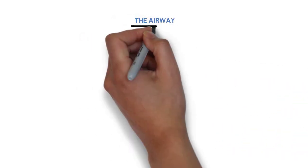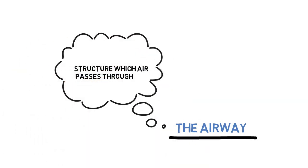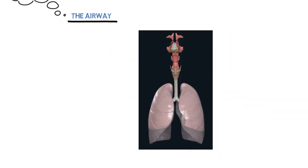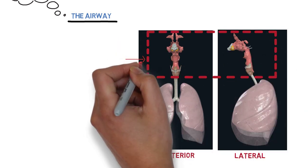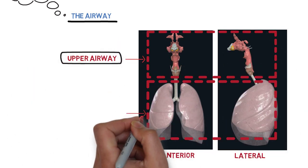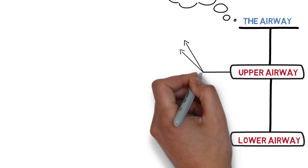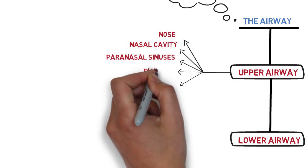Our first component is our airway. They are essentially the structures which air passes through. We can divide our airway into the upper and the lower airway. Upper airway denotes everything which is above the trachea, and lower airway starting with the trachea and all the structures below it. The components of the upper airway start with our nose, nasal cavity, our pharynx, and larynx.